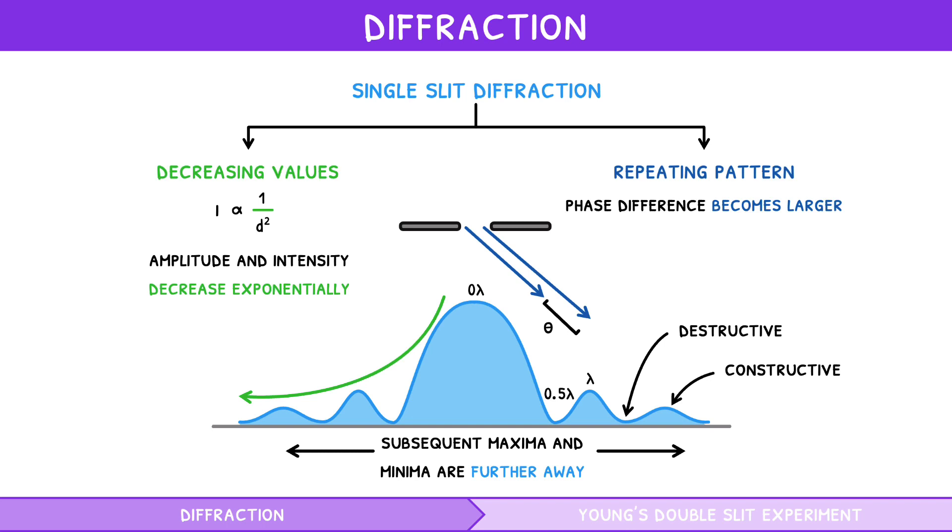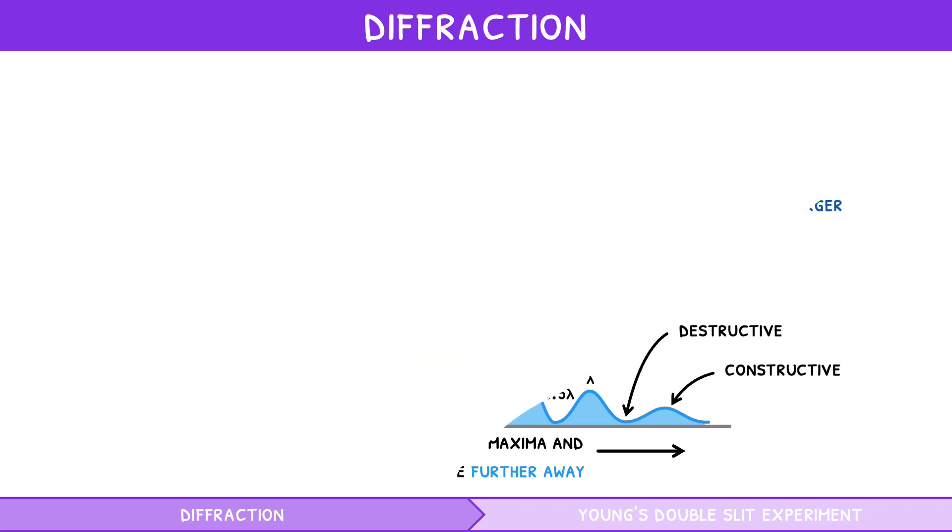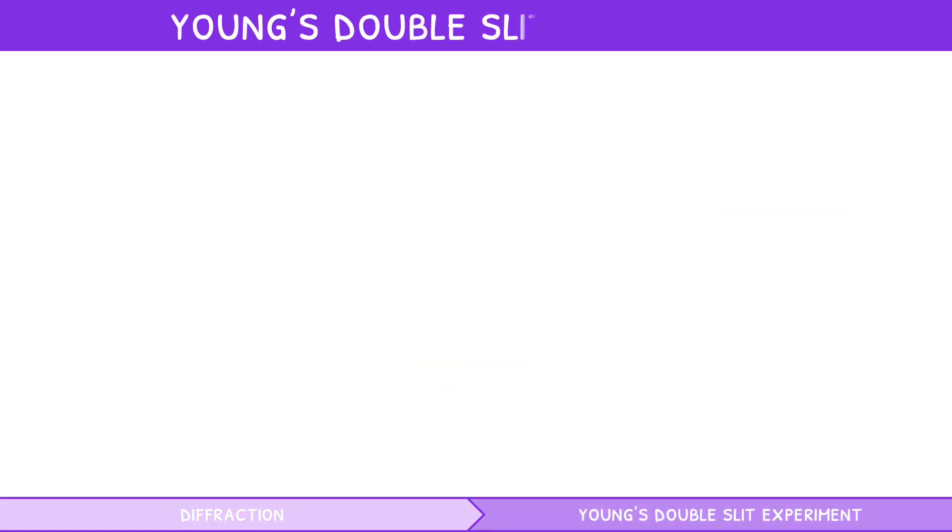This is the basics of diffraction through a single slit. But what happens when two slits are involved? Cue Young's double slit experiment.